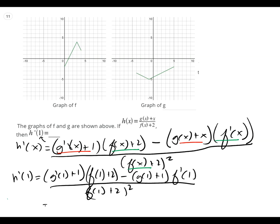Now the key is understanding what all that stuff means. When you have a prime on it, what does that mean? Slope. So you've got to go to the graph and read the slope. I'm going to go to the x value of one on the graph. I've got my g graph — go down my g graph and figure out the slope of that line, which looks like negative one-half plus one. And then f of one means the y value: go to one on my f graph and read the y value off the graph, which is zero.